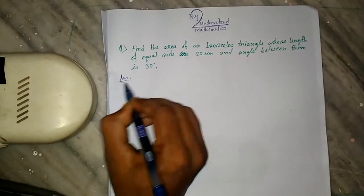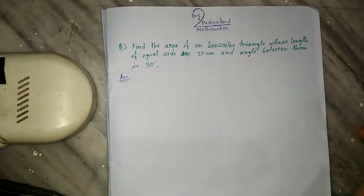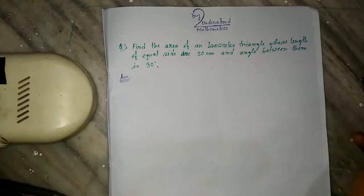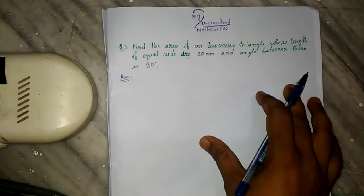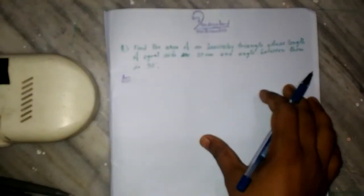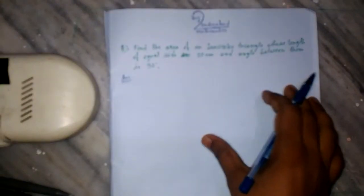First, we all know what an isosceles triangle is. An isosceles triangle is a triangle whose two sides are of equal length.